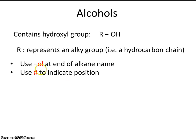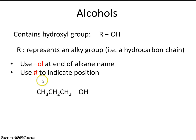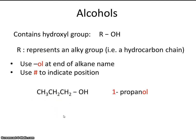Here are the rules for naming alcohols: use 'ol' at the end of the alkane name, and use a number to indicate the position — we have to say what carbon the alcohol is bonded to. For example, this molecule has one, two, three carbons. A parent chain with three carbons is propane, and this alcohol group is bonded to the first carbon. So we add 'ol' to the end and call this 1-propanol.